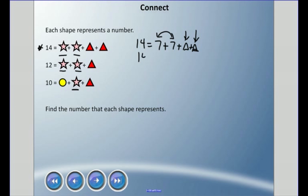If I go to let's say six, 14 equals, we'll try 6 + 6. Well 6 + 6 + 6 + 6 is 12. That would leave us two over, that could mean that each triangle is one. We can go with that for now. But let's look at the second one here. If we use that idea that the star is a six, so now 12 equals 6 + 6, and we're assuming that the triangle is a one, we're at 13.